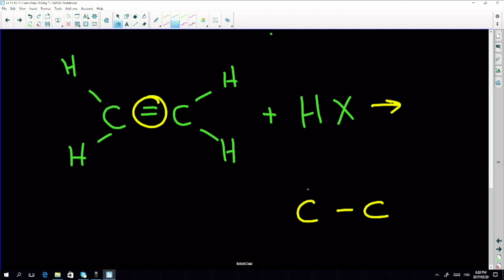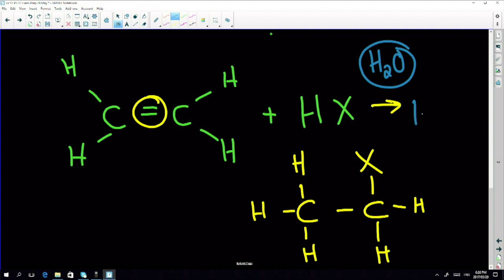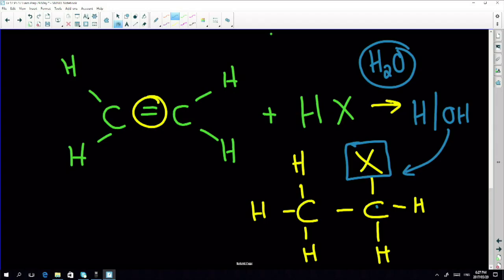Now the problem here is if I have water present in my system. Remember water breaks up to H and OH essentially when it comes to my organic chemistry. What will happen is because of the nature of the OH ion - instead of the halogen going onto the carbon, the OH will go onto it. So instead of creating a halo-alkane, I'll create an alcohol. So this will actually change to this.